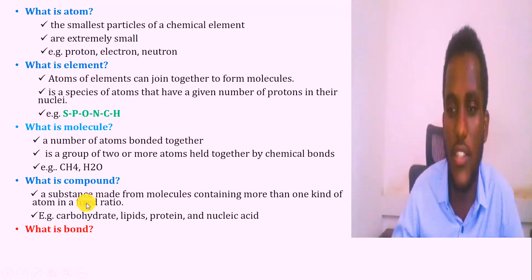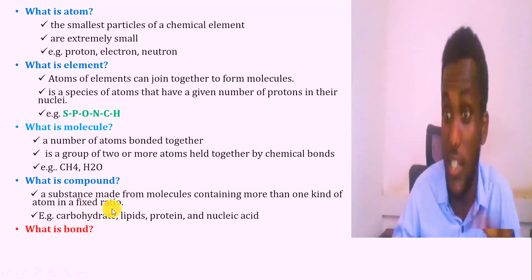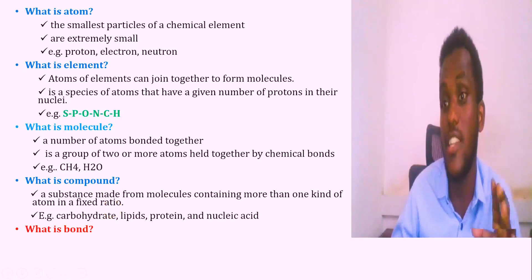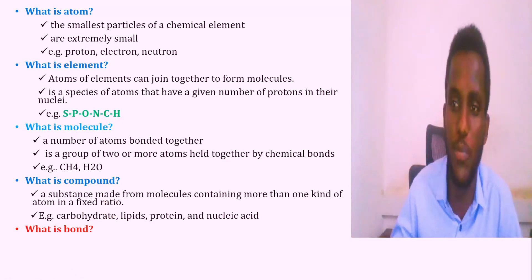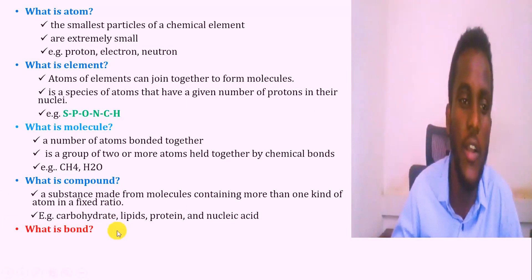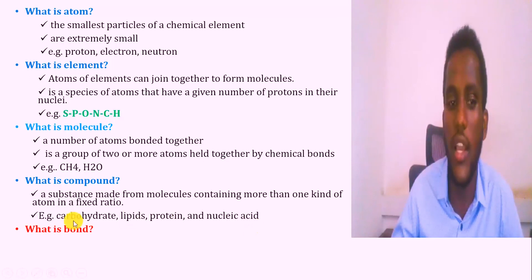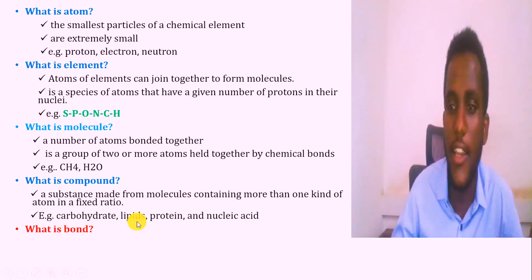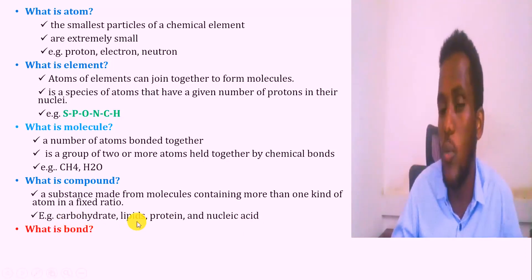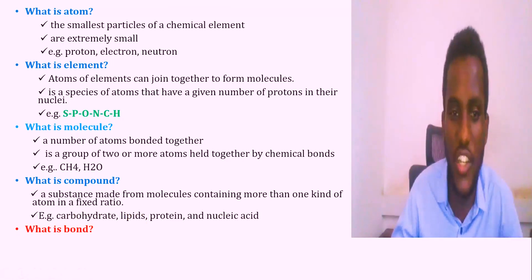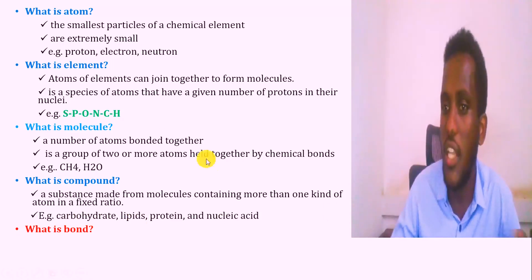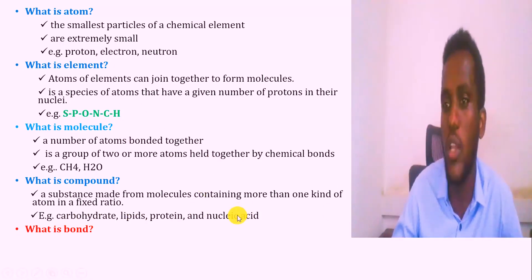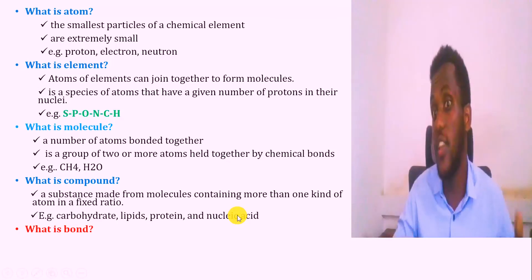For example, in the living organism's biomolecular aspect, the main compounds are carbohydrate, lipid, protein, and nucleic acid. Carbohydrates contain carbon and hydrogen in addition to oxygen. Proteins contain sulfur and phosphorus. Nucleic acids contain phosphate.